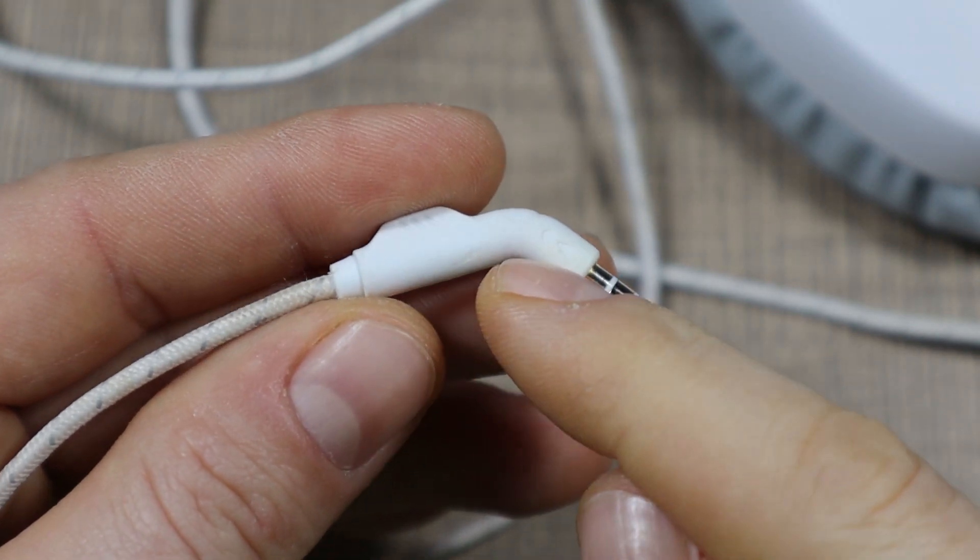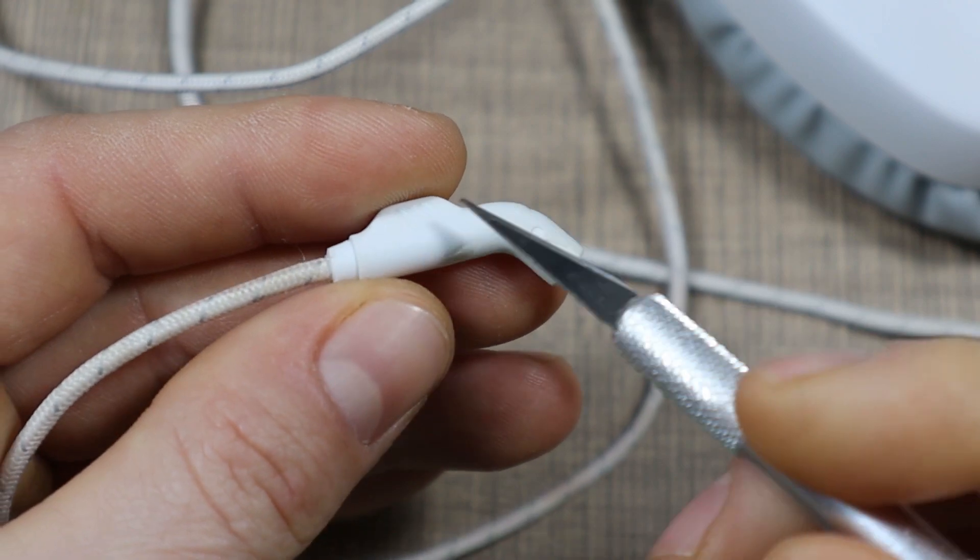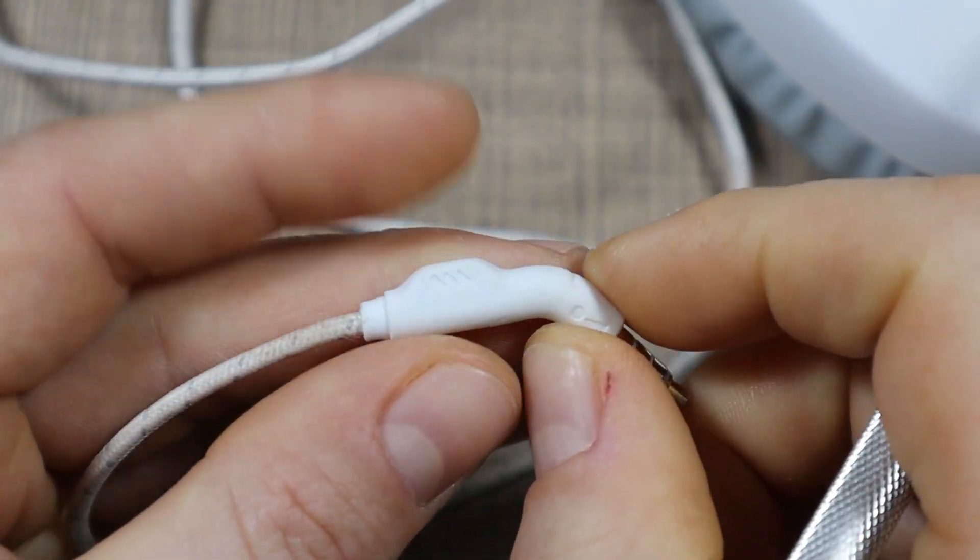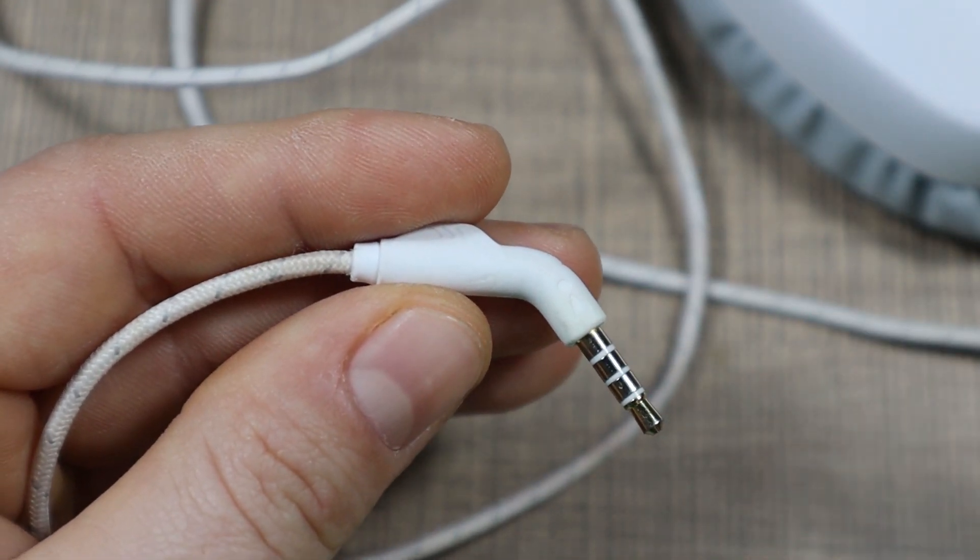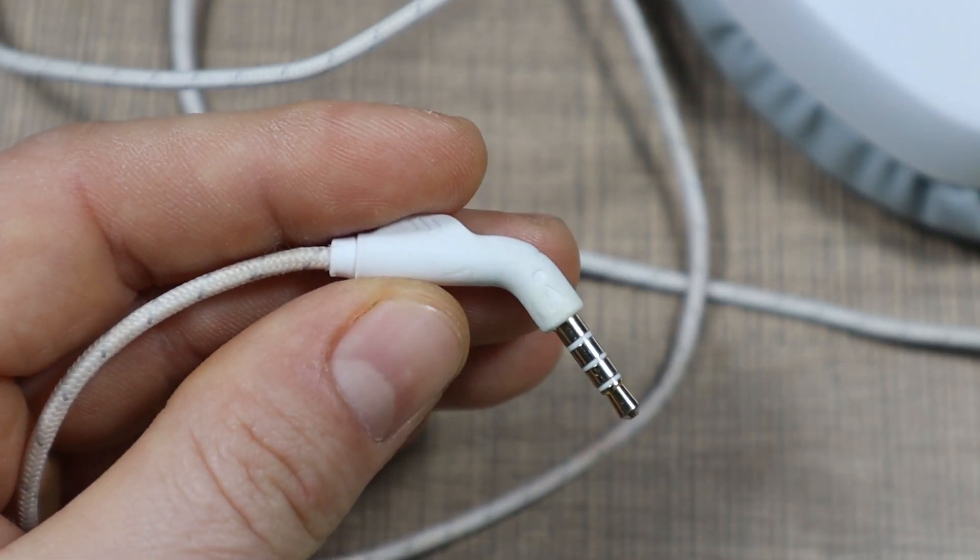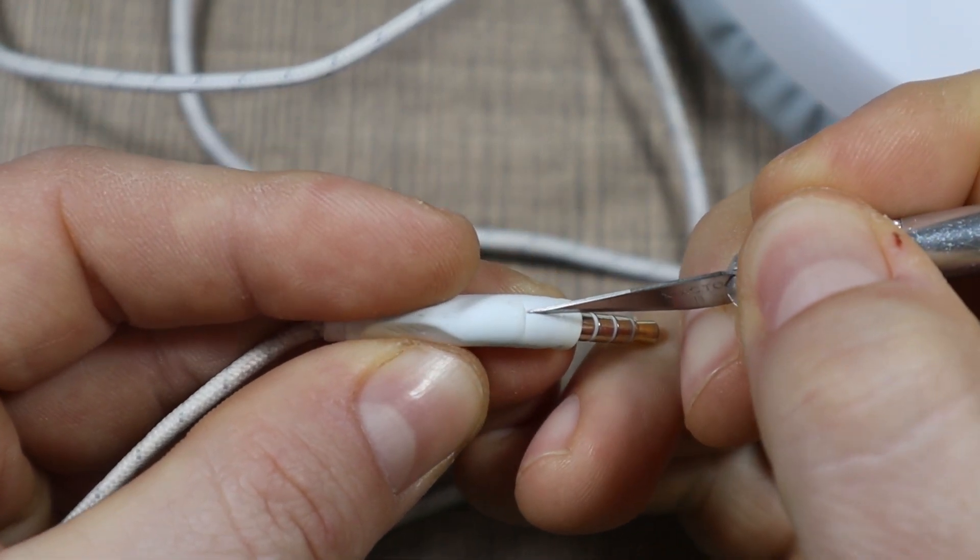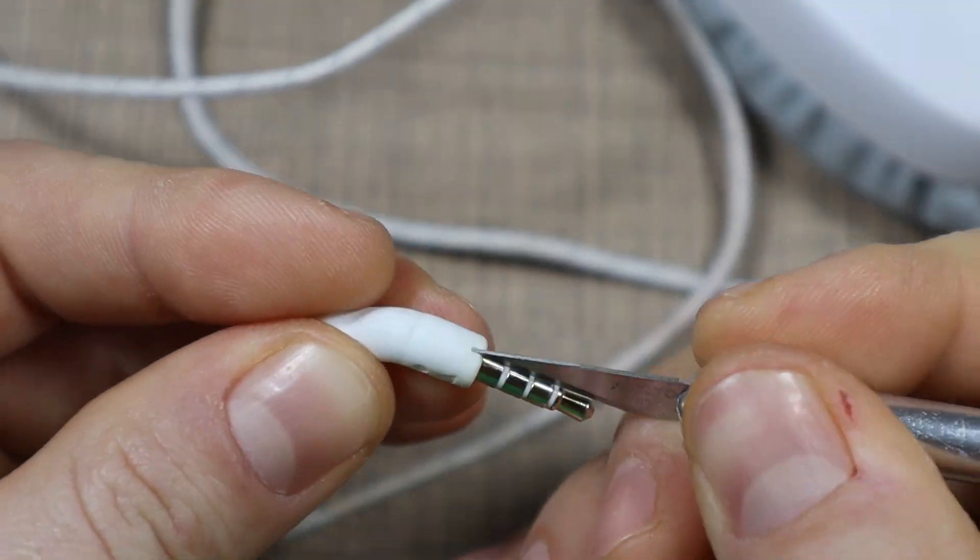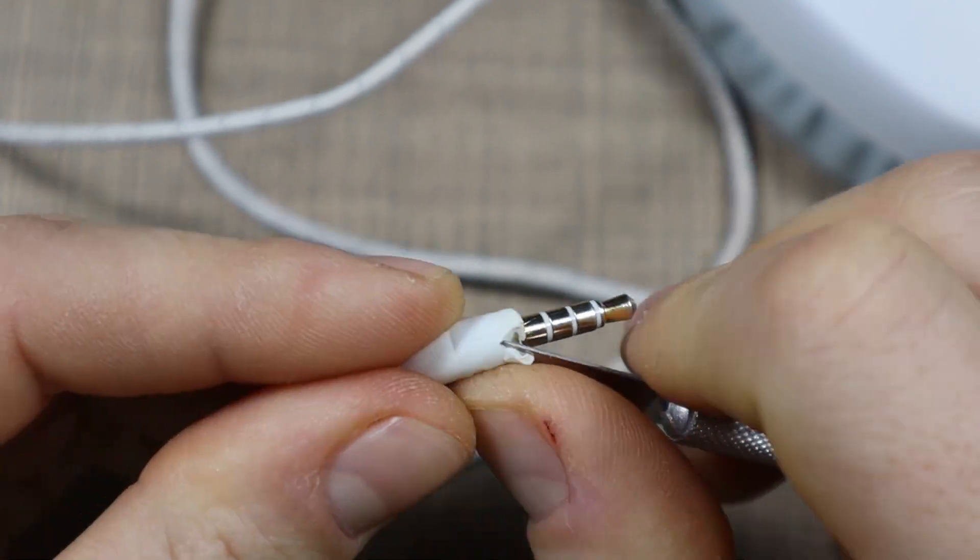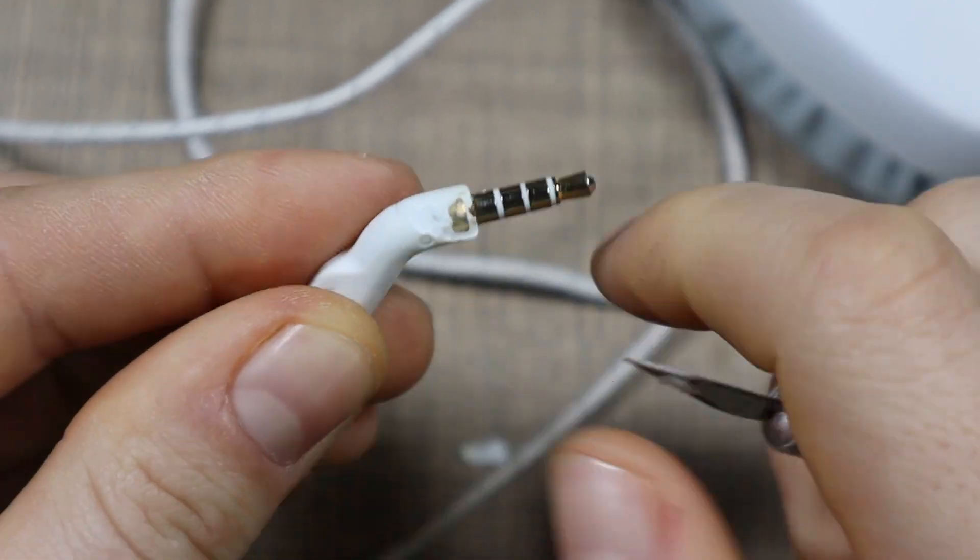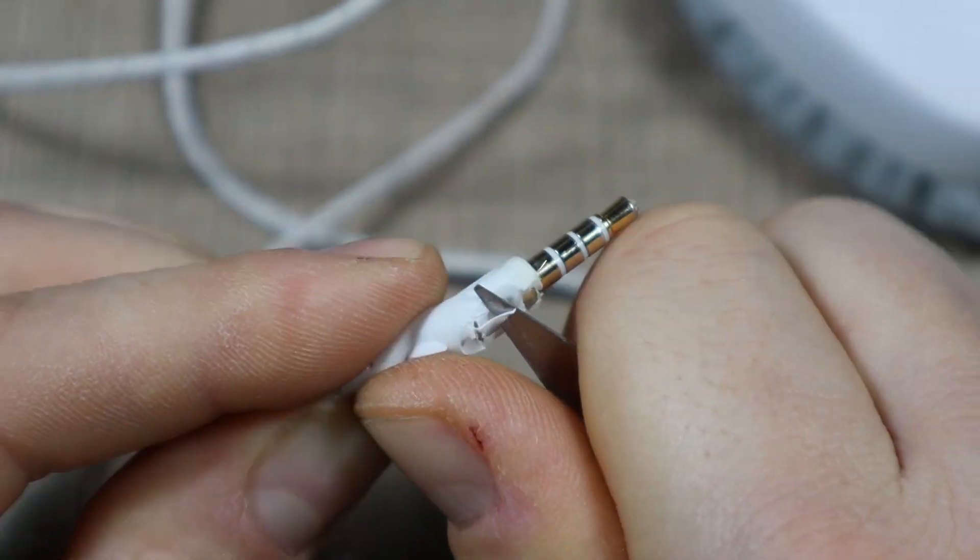The way that I'm going to do this is to use an exacto knife and start cutting up the silicon plastic that's around the connector. I don't want to cut into the connector so you really need to be careful when doing this because this might slip and it might cut you in the fingers. I'm trying to be extra careful.